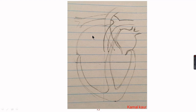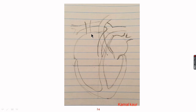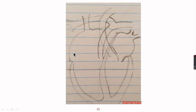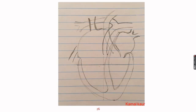In the right atrium, the vena cava brings blood from the body. At this point we will make the superior vena cava, which brings blood from the upper regions of the body, and here we will make the inferior vena cava, which brings blood from the lower parts of the body. With this, we have drawn all the blood vessels linked with the heart.